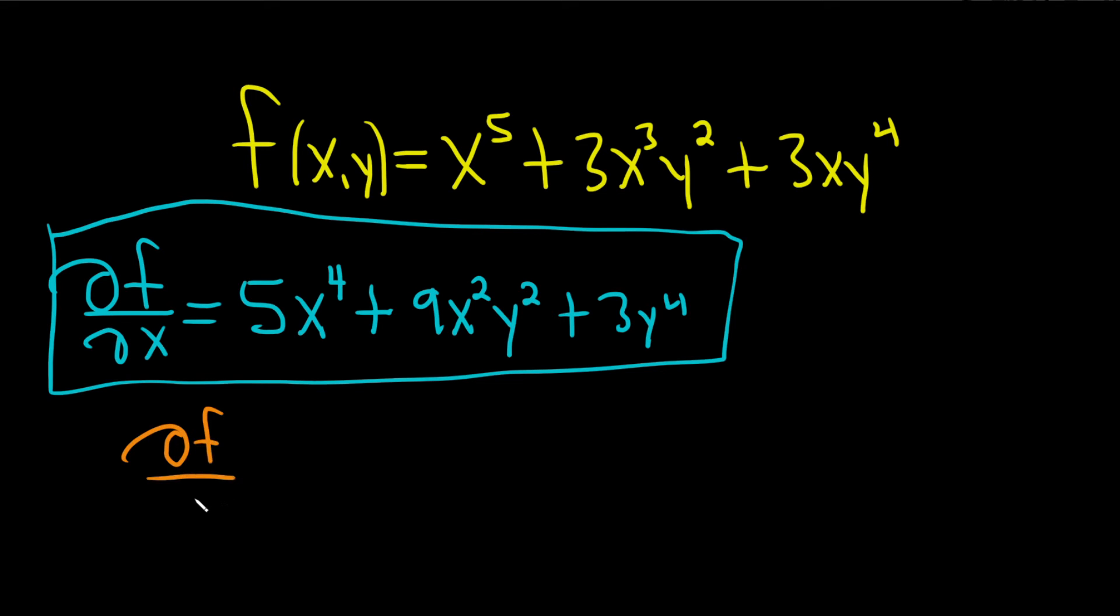So ∂f/∂y. So now all of the x's are constants. So here, when you differentiate x to the fifth, you're just going to get zero because it's a constant.